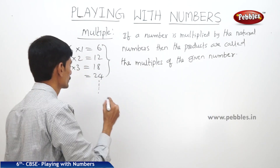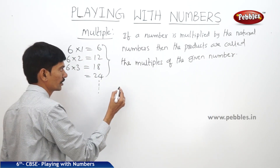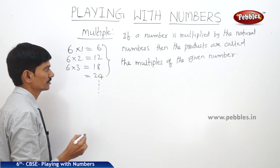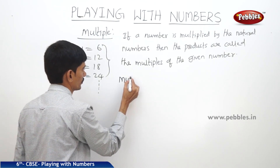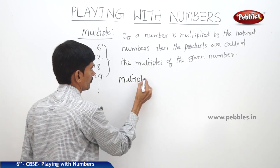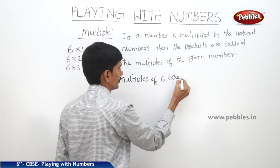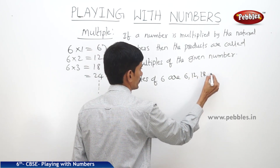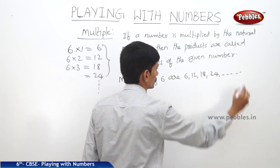So the products six, twelve, eighteen, twenty-four, and so on are all the multiples of the given number six. We can write: multiples of six are six, twelve, eighteen, twenty-four, and so on.